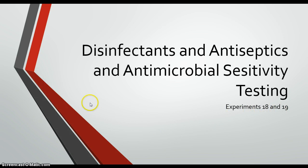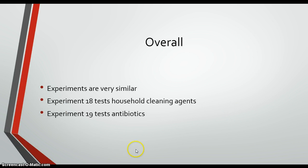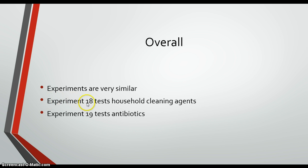I did experiments 18 and 19 together because they're very similar. Experiment 18 was disinfectants and antiseptics, and experiment 19 was antimicrobial sensitivity testing. They're very similar because we're going to be seeing how certain chemicals affect the growth of microorganisms. In experiment 18, we tested household cleaning agents, and in experiment 19, we tested antibiotics.